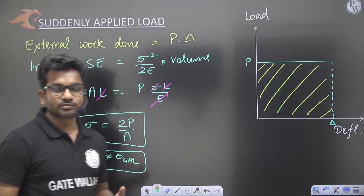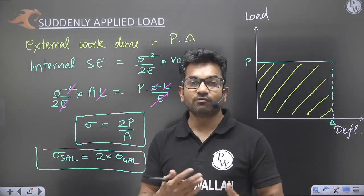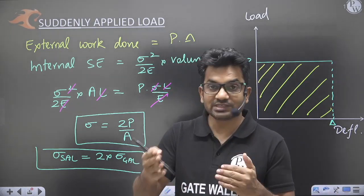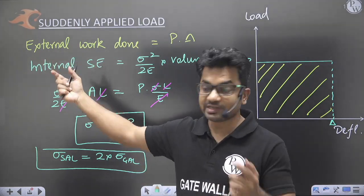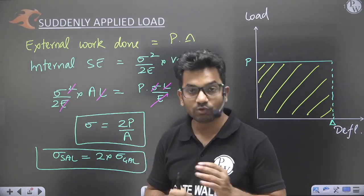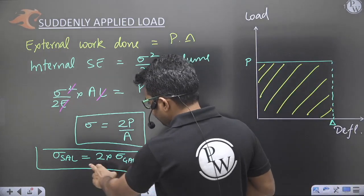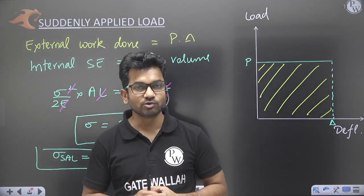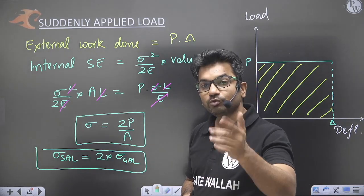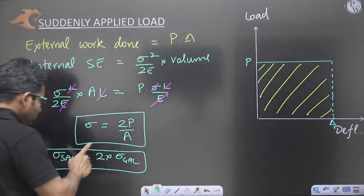Remember this result. In objective questions they might ask: given the force and area, if the load is applied suddenly, what are the stresses? In a hurry you might miss the word 'suddenly' and simply calculate P/A — that would be wrong. Stress in suddenly applied load equals 2 times the stress due to gradually applied load. Since stress is directly proportional to strain, strains will also be 2 times as compared to gradually applied load.